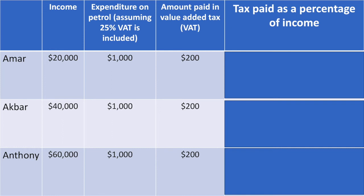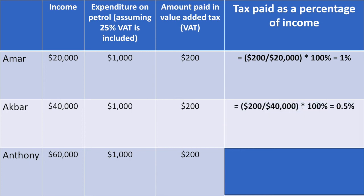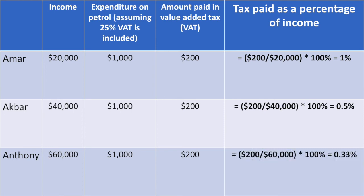However, as a percentage of their incomes, it is higher for the brothers on lower incomes. Amr pays $200 in tax of his $20,000 income, which equates to 1% of his income. Akbar pays 0.5% of his income as VAT and Anthony pays 0.33% as VAT. As you see, the percentage taken from the higher income is less. This is one key argument made by opponents of such taxes, arguing that they place an unfair burden on the poor.